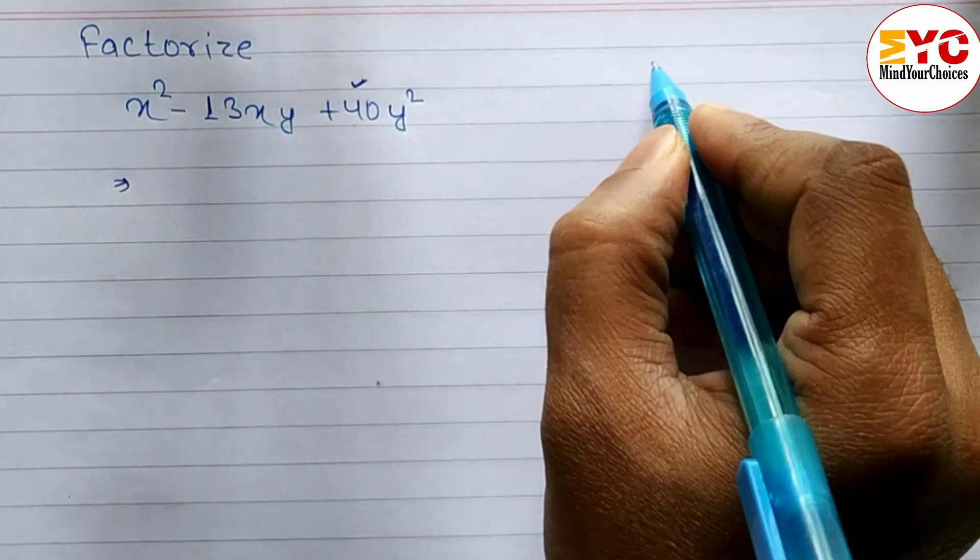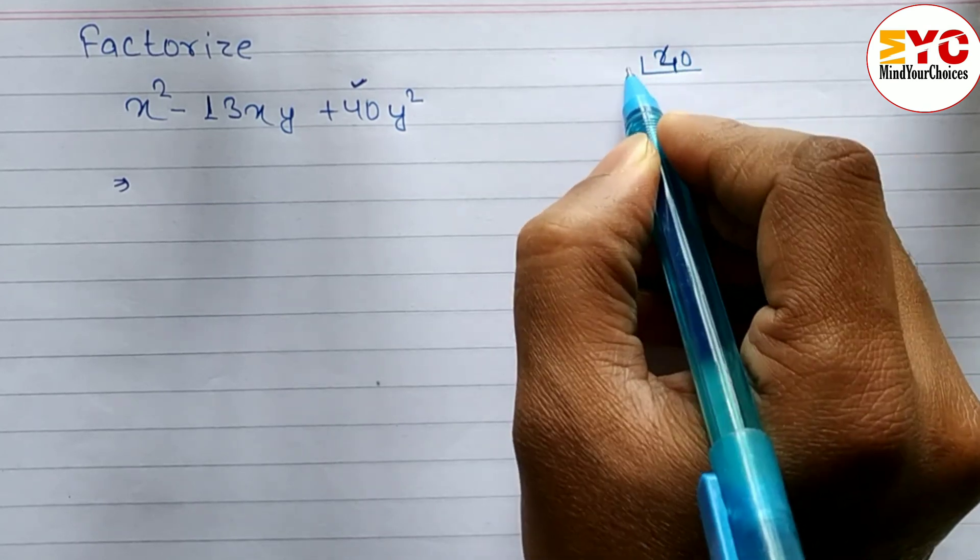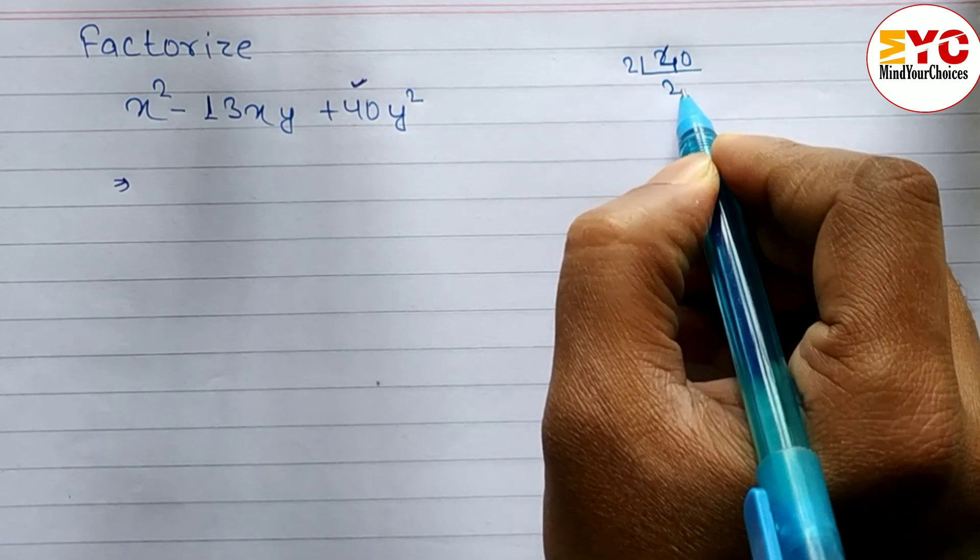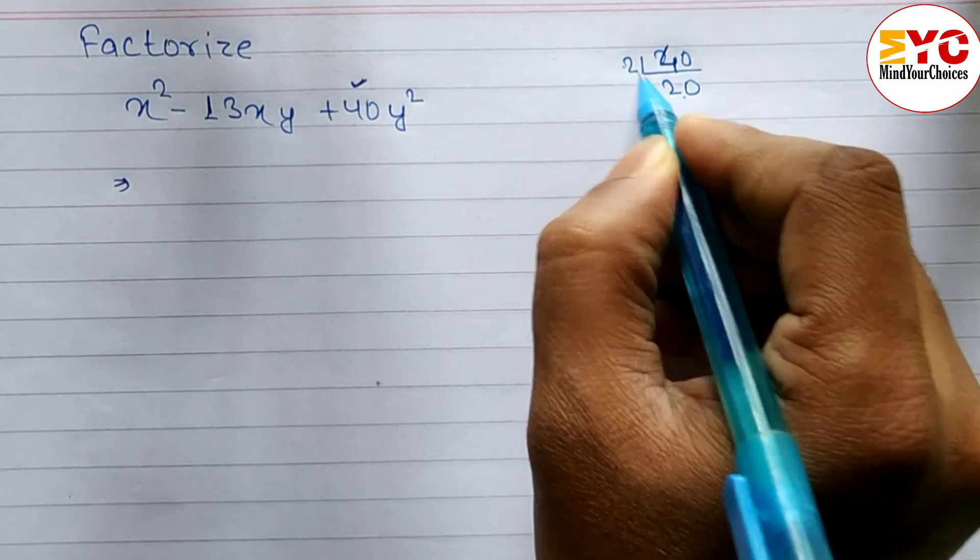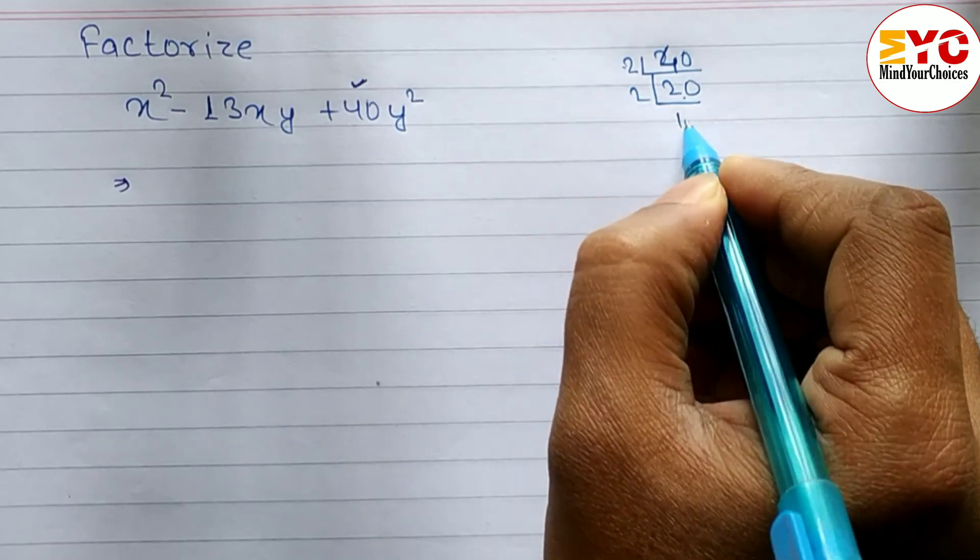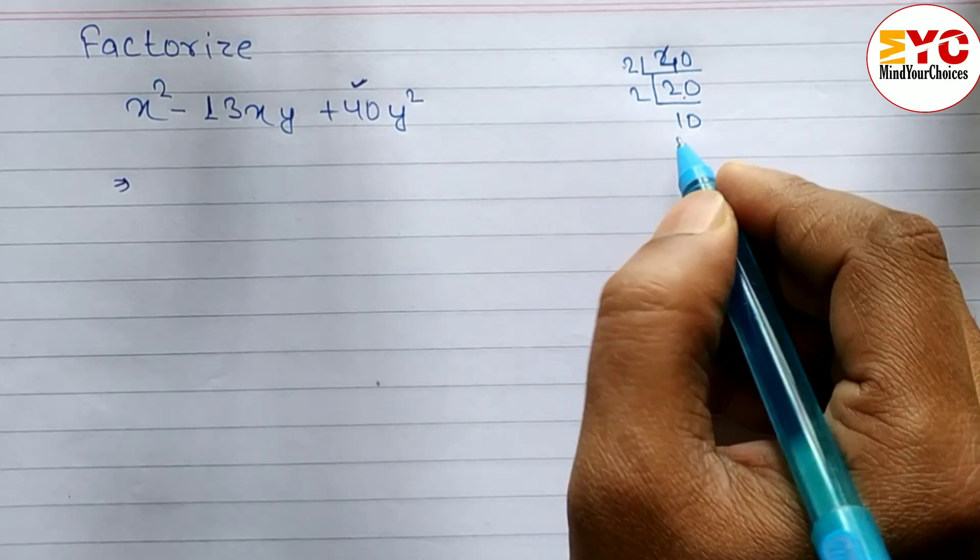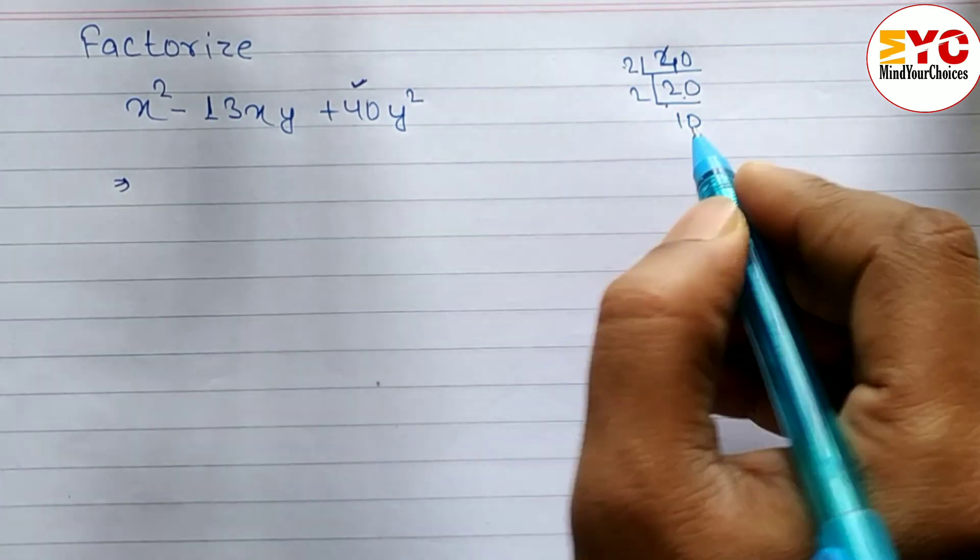We have to find the factors by writing 40 and dividing by the smallest number. 2 times 20 equals 40, but 2 plus 20 equals 22, not 13. Try 4 and 10: 4 plus 10 equals 14, still not 13.